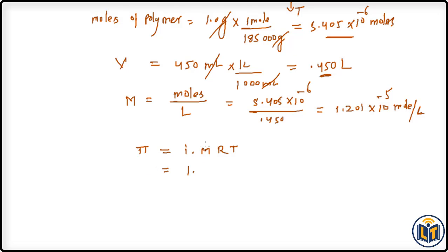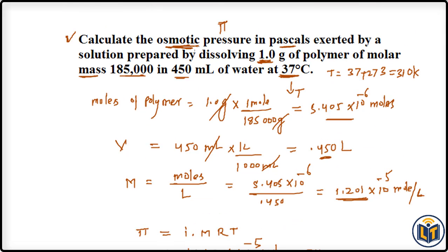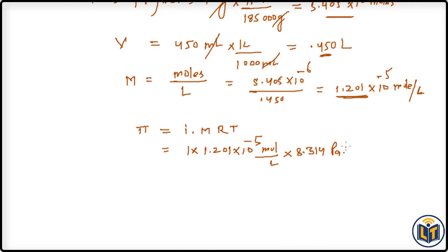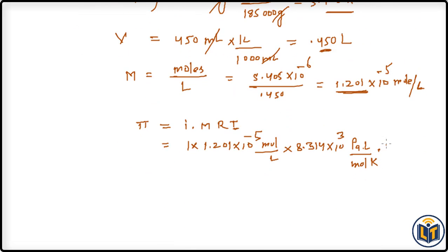Plugging in values: molarity is 1.201 × 10⁻⁵ mol/L; R is 8.314 pascal·liters per mole per Kelvin (using this value since we need pressure in Pascals); T is 310 K. Units cancel: mol cancels mol, liter cancels liter, K cancels K — we are left with only Pascals, which will be our osmotic pressure unit.